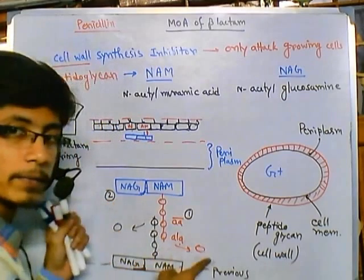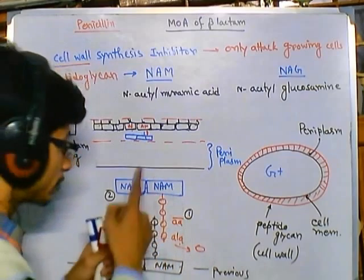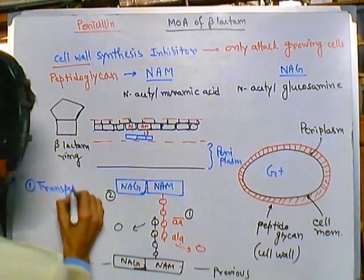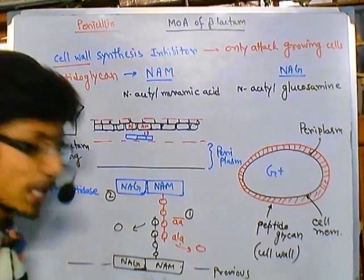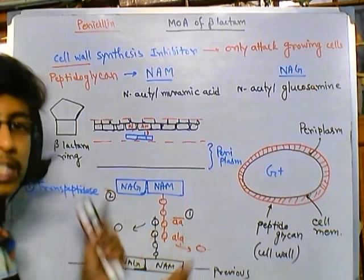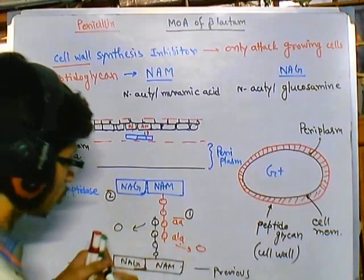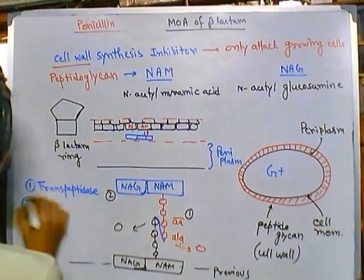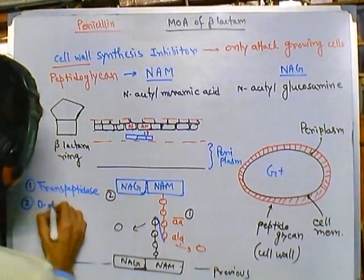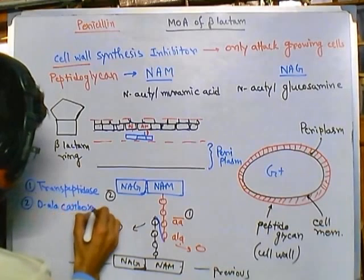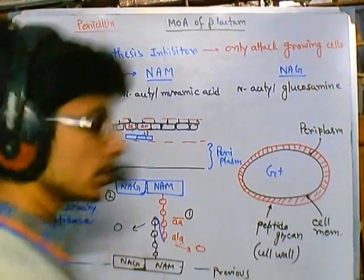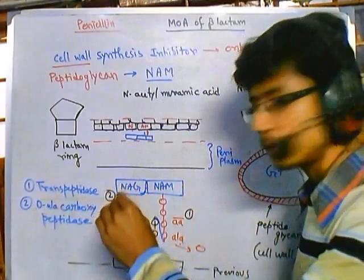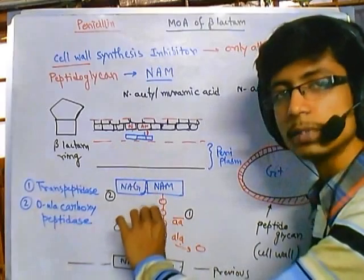This first task — chopping one amino acid away from the five amino acid chain — is mediated by an enzyme called transpeptidase. These transpeptidases cleave one amino acid away from each five amino acid chain. The second important task — cross-linking the two chains together — is mediated by another enzyme called D-alanine carboxypeptidase, or simply carboxypeptidase. So these are the two important enzymes: transpeptidase, which chops the amino acid away, and D-alanine carboxypeptidase, which cross-links the terminal amino acids with each other.